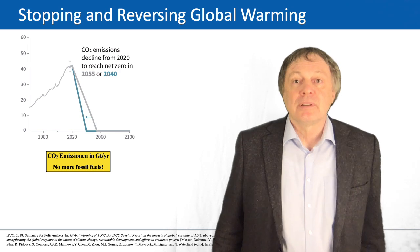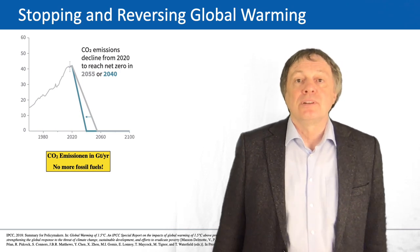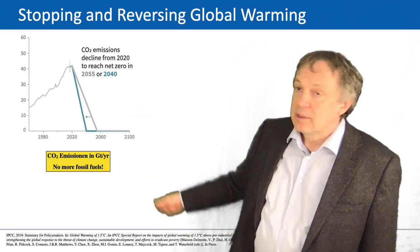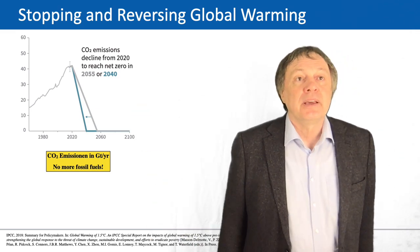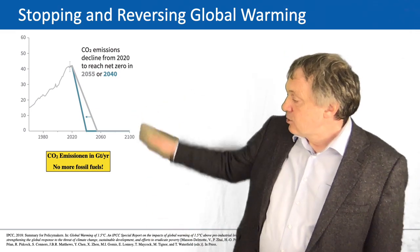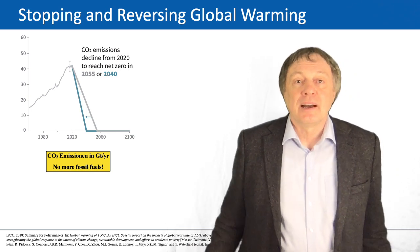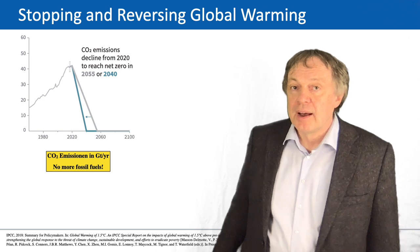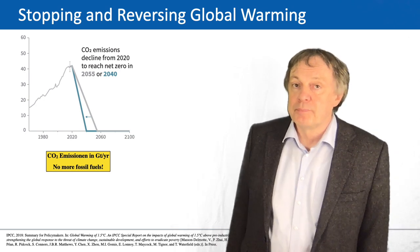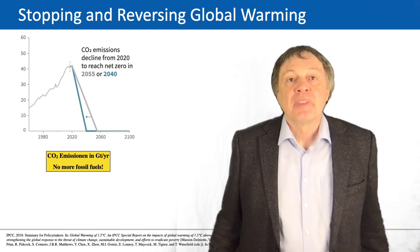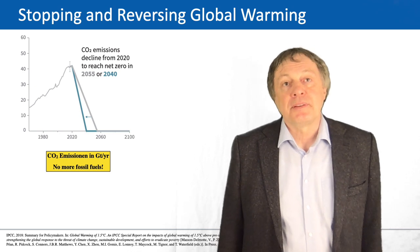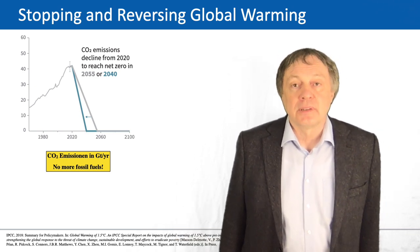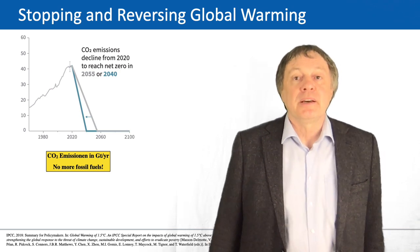What is assumed in the report as a necessity to reduce global warming to 1.5 degrees? The CO2 emissions have to be radically reduced. This has to be done in a rather fast, rapid drop-down of emissions until the year 2055, or better in the newer report until 2040. That is what has to be realized.